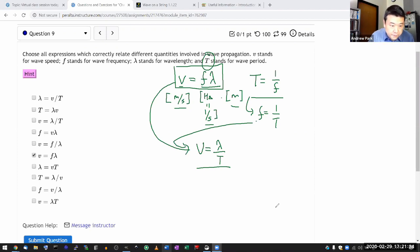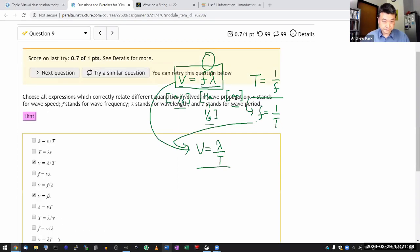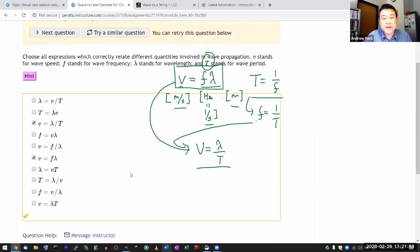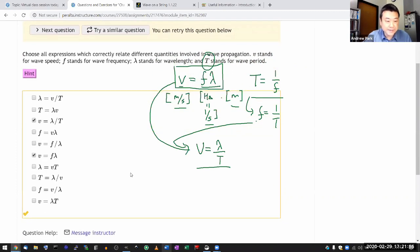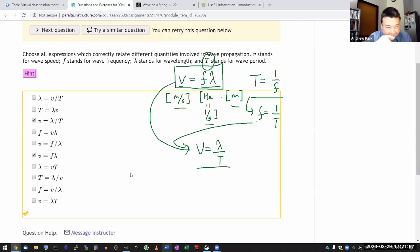Let's see. Wave speed, yeah, lambda over T. So there are those two. Now I'm pretty sure if you simply say submit question at this point, you'll only be partially right. Let me give that a try and see. Yeah, and that's because there are other expressions that are equivalent to these that you still need to select.